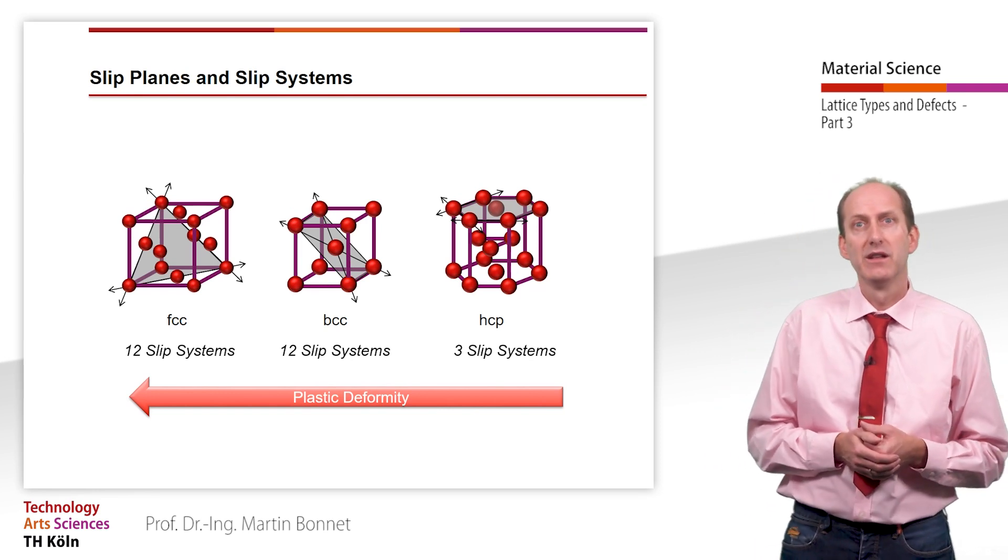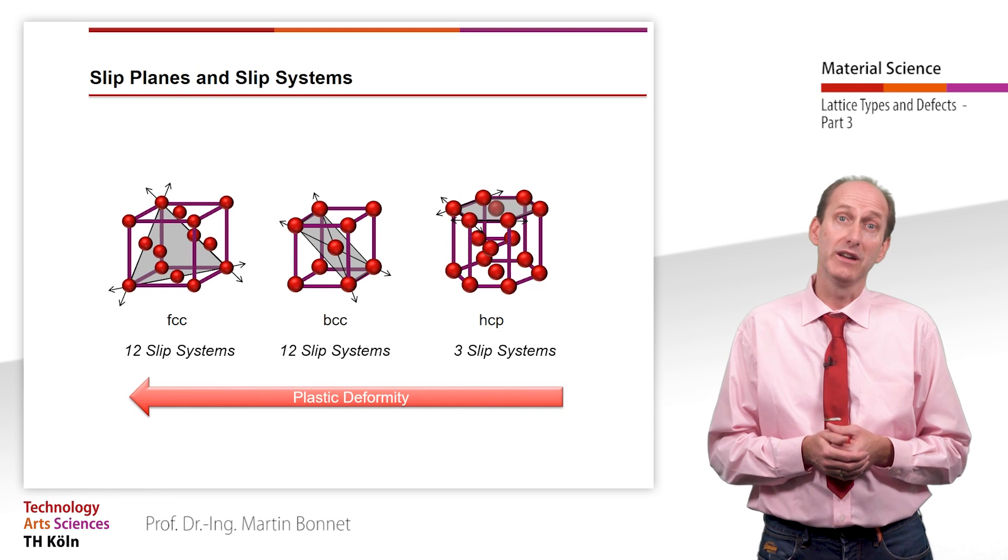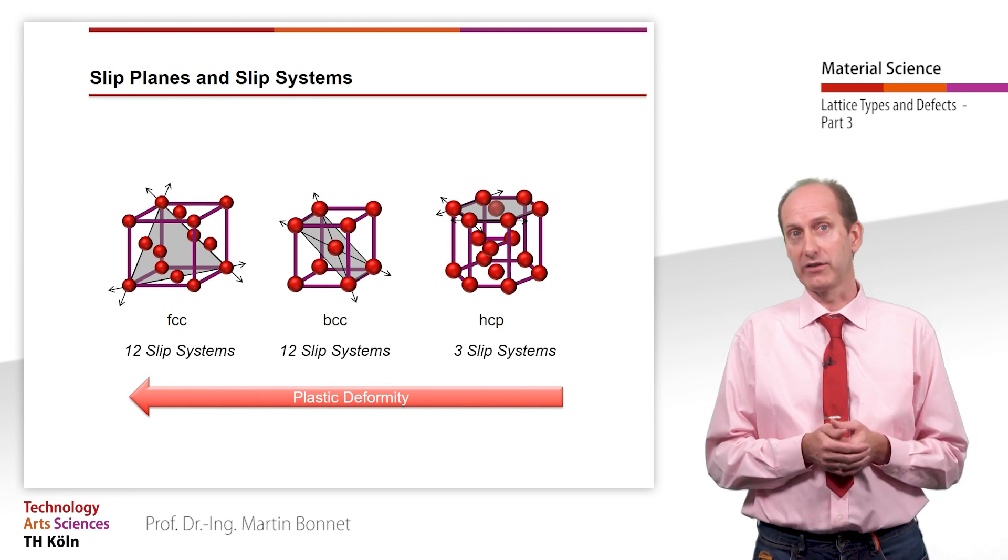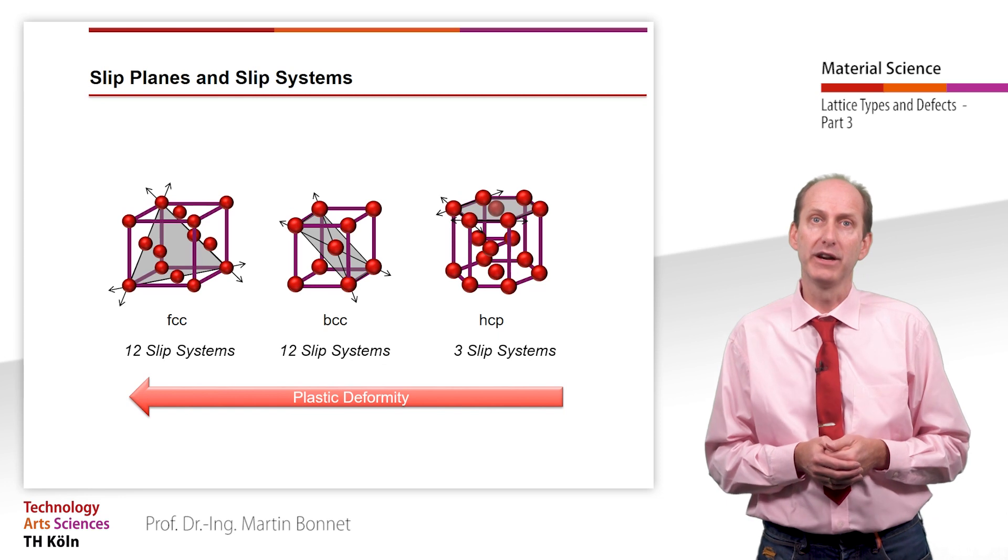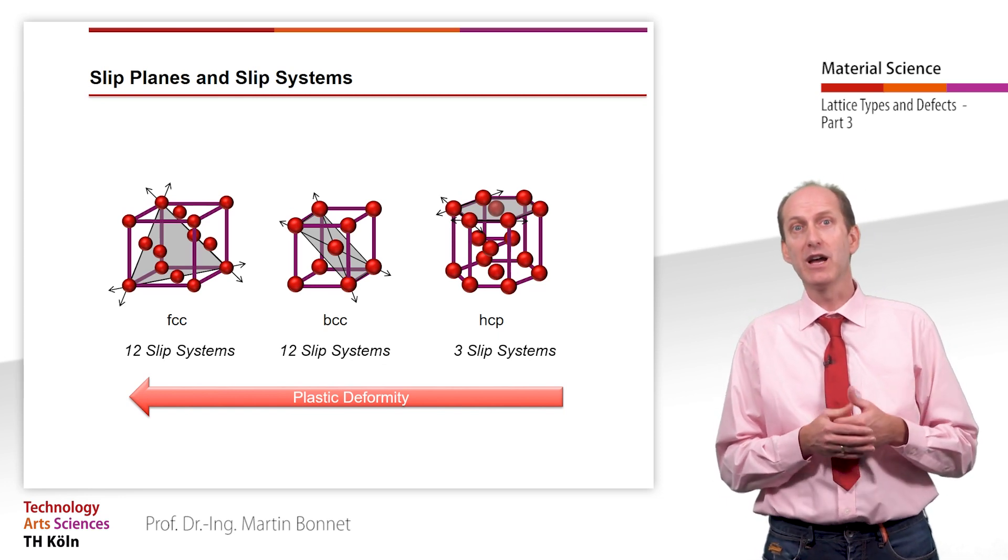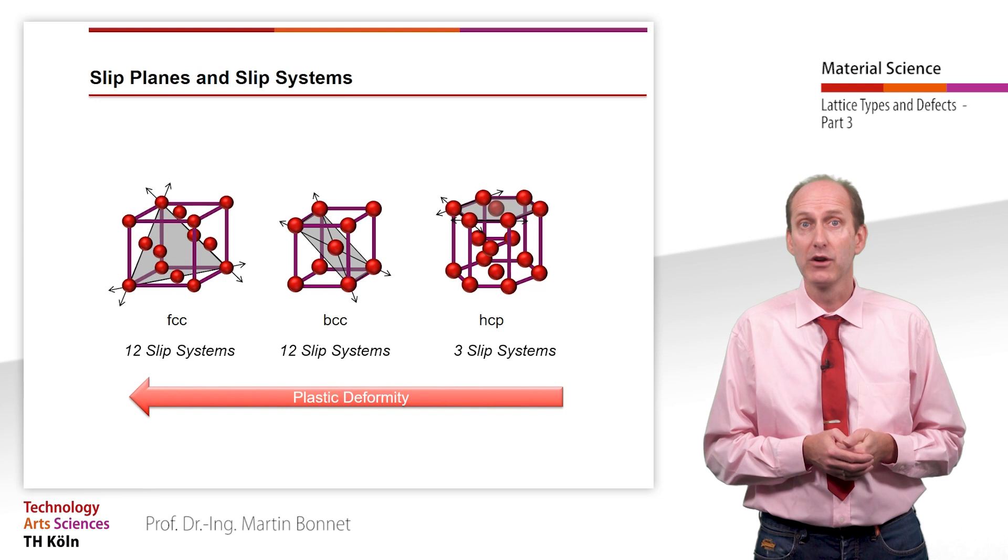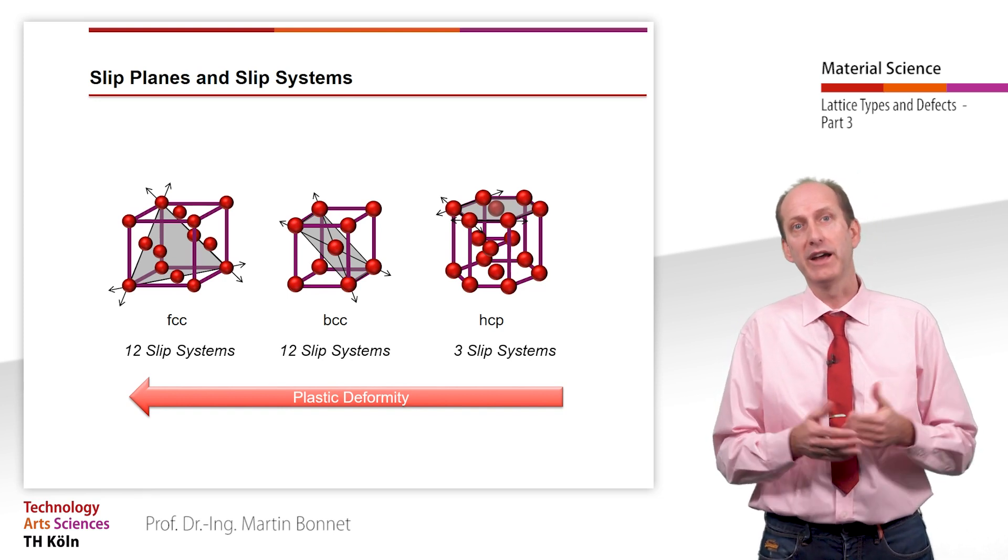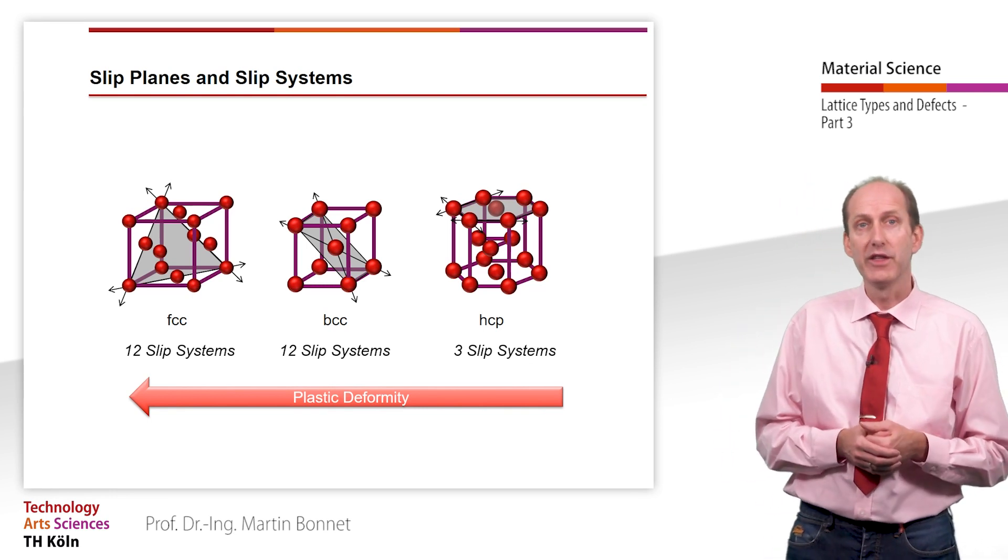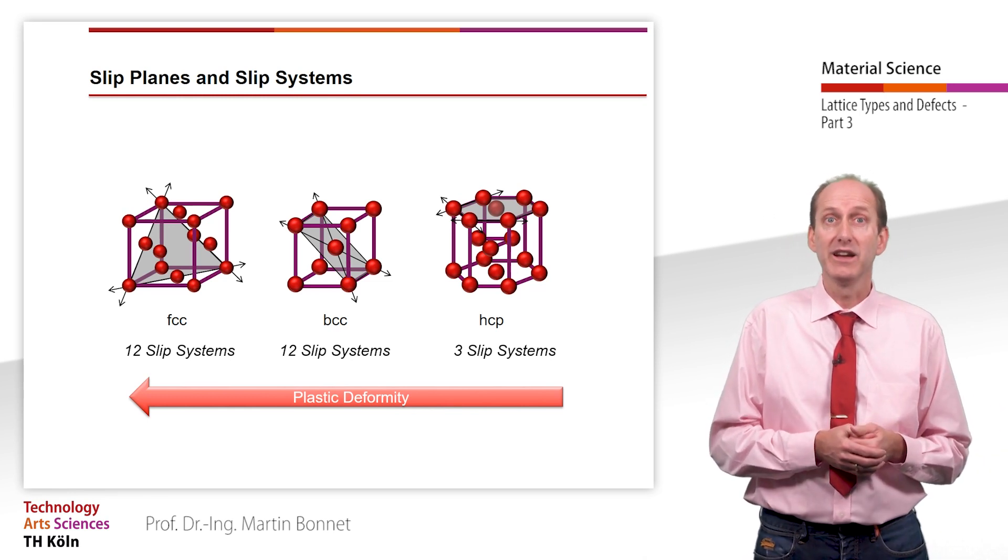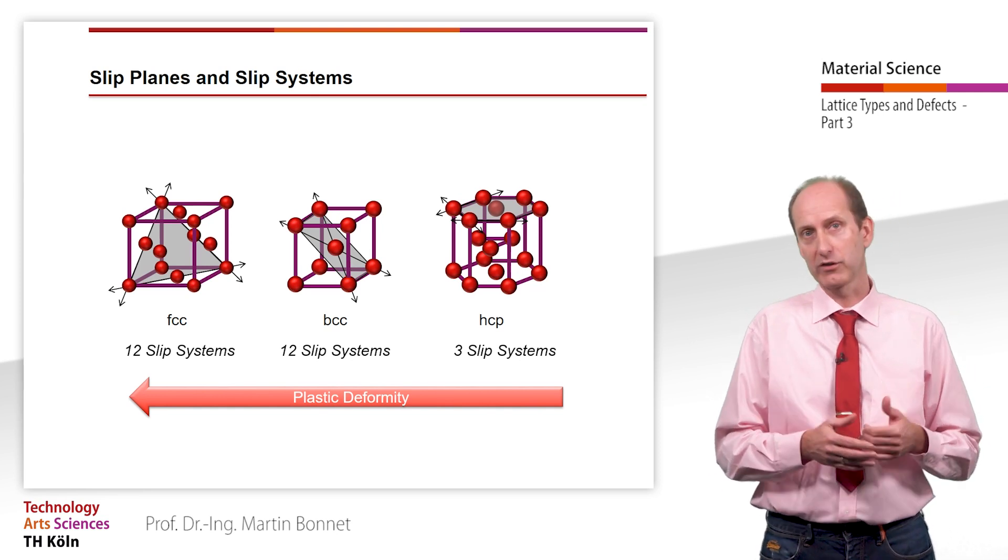In HCP metal lattices, there are only three independent slip systems, which means that their plastic deformity is inferior to that of metals with cubic lattices. The substantially higher plastic deformity of FCC metals compared to HCP metals can be explained by the higher occupancy density of the slip systems. So, we can summarize that the plastic deformity of FCC metals is higher than that of BCC metals and much better than that of metals with hexagonal closed-packed lattices.